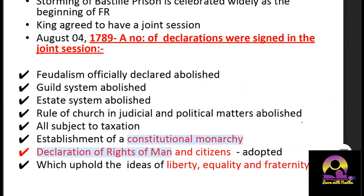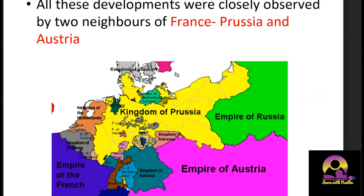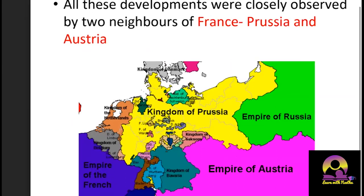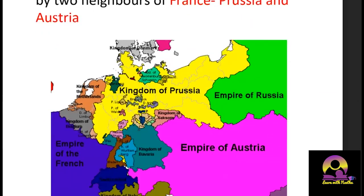The most interesting part of the story: all these developments were closely observed by two neighbors of France — Prussia and Austria. Do not confuse Prussia with Russia. On the map, France is here, Prussia is shown in yellow, and Austria is nearby. We are not talking about Russia at this point — focus only on these three countries.